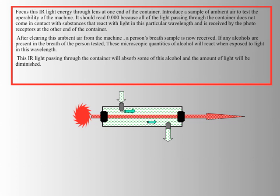Now we have the baseline measurement with no alcohol. At this point, when the light is shined through again, if there are molecules of alcohol bouncing around in that chamber, the microscopic molecules of alcohol deflect some of the light, and the computer at the other end of the sample chamber measures the amount of light that got through.